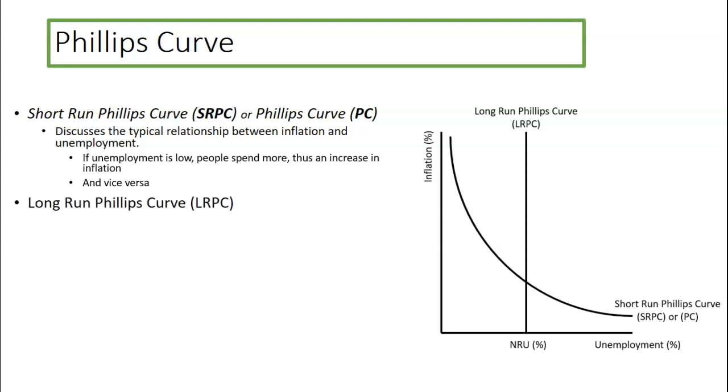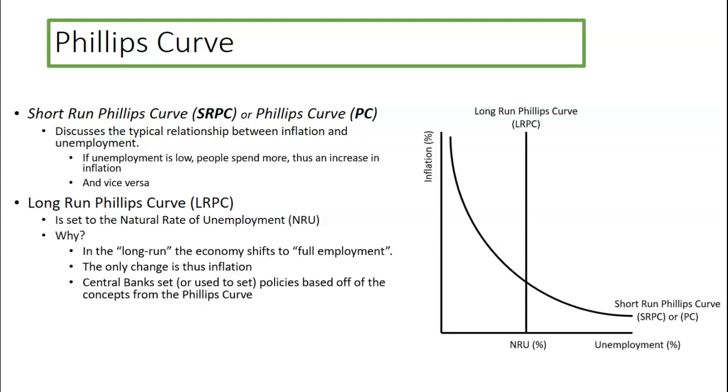The long run Phillips curve, or LRPC, is set at the natural rate of unemployment, the NRU, that whole full employment thing. Why? Because in the long run, the macroeconomics long run, the economy shifts to being at full employment. Thus, it identifies that really the only change in the long run is the inflation rate.